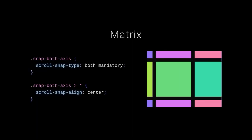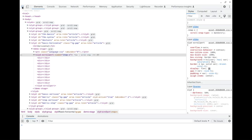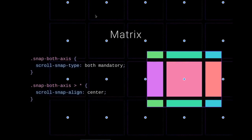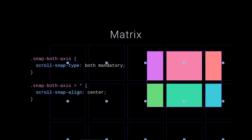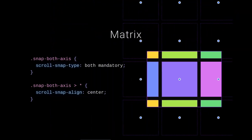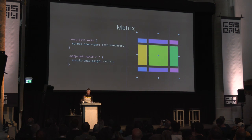You can also snap in both axes — I call it a matrix. Let's pop open DevTools for this: select the element, go to the scroll snap badge next to the grid badge, enable it — and we get to see all snap points across both directions. That just looks amazing. So you've got your DevTools and your matrix of snapping.